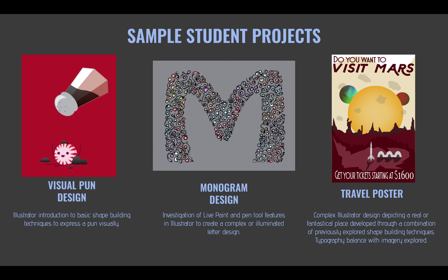I next wanted to show some examples of student projects so you get an idea of the types of things your child will be creating. The first is the visual pun design, and that's what we're working up to right now. Your child has so far been going through a series of Illustrator tutorials to teach them how to use the basic tools and techniques of this pretty immense software. We'll jump next into this visual pun design once that foundation is built. The second project is a monogram design, with an investigation of live paint and pen tool features in Illustrator to create a complex or illuminated letter design.